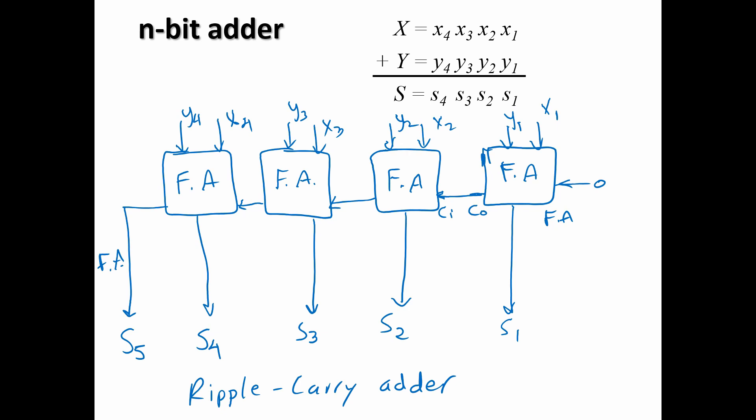And so that delay or that first number ripples through the whole adder. So that carry, the first carry ripples through the whole full adder. So that's why we call it a ripple carry adder. So that's an n-bit adder.